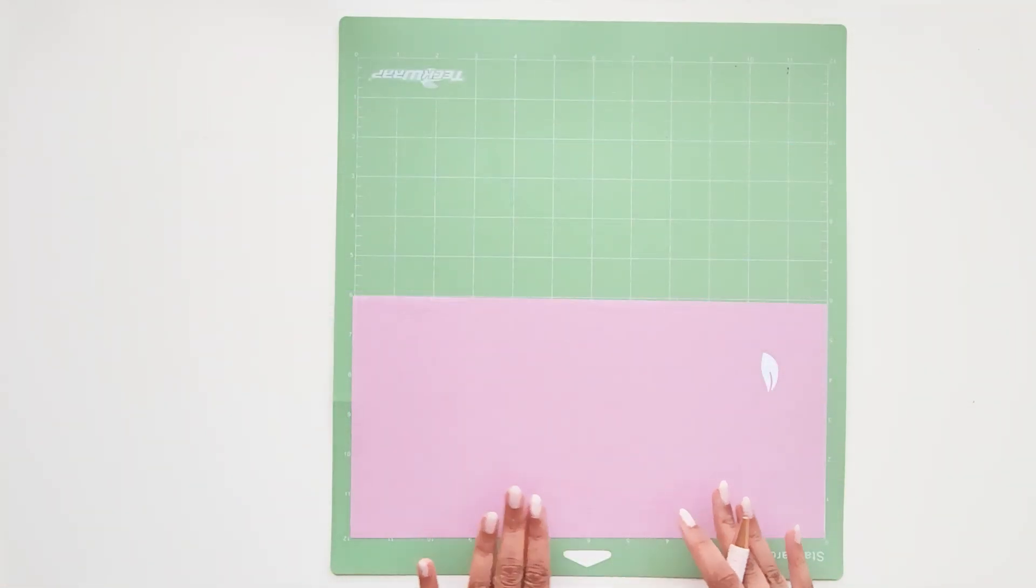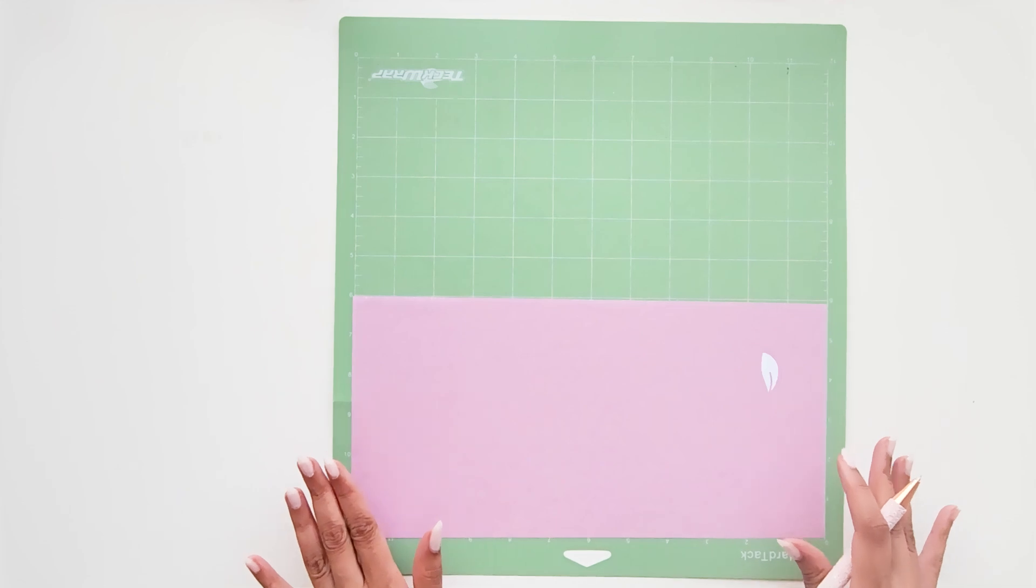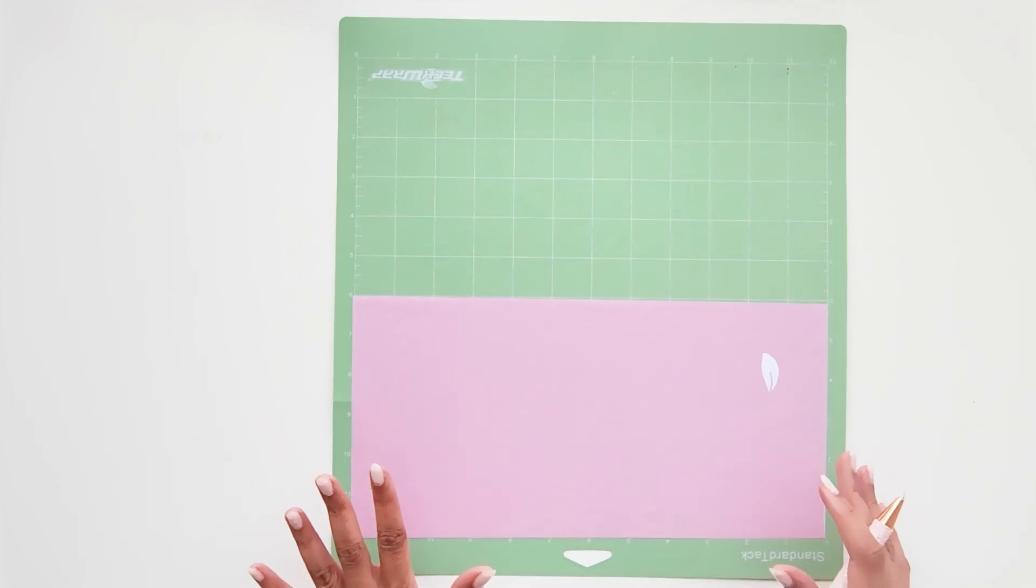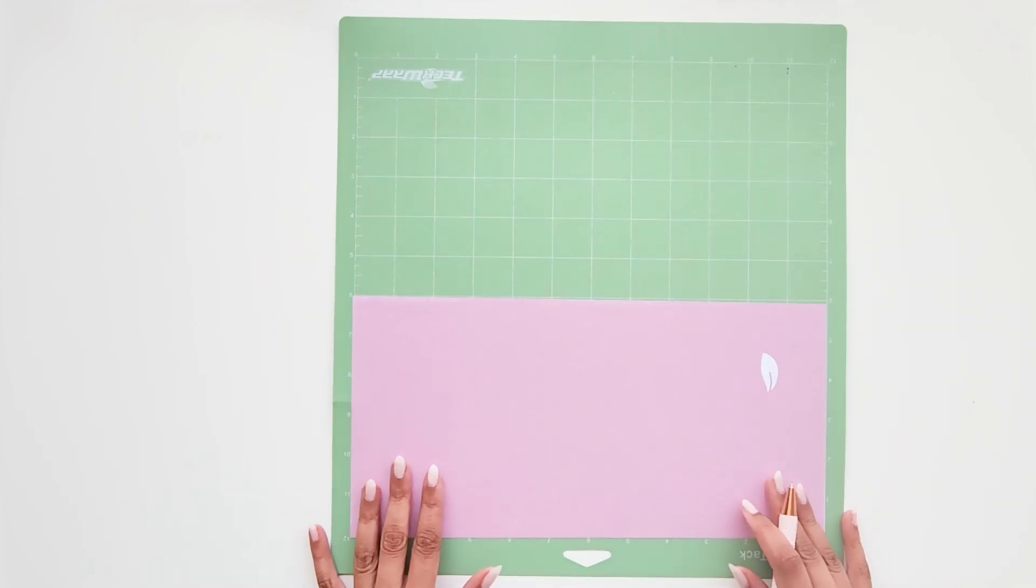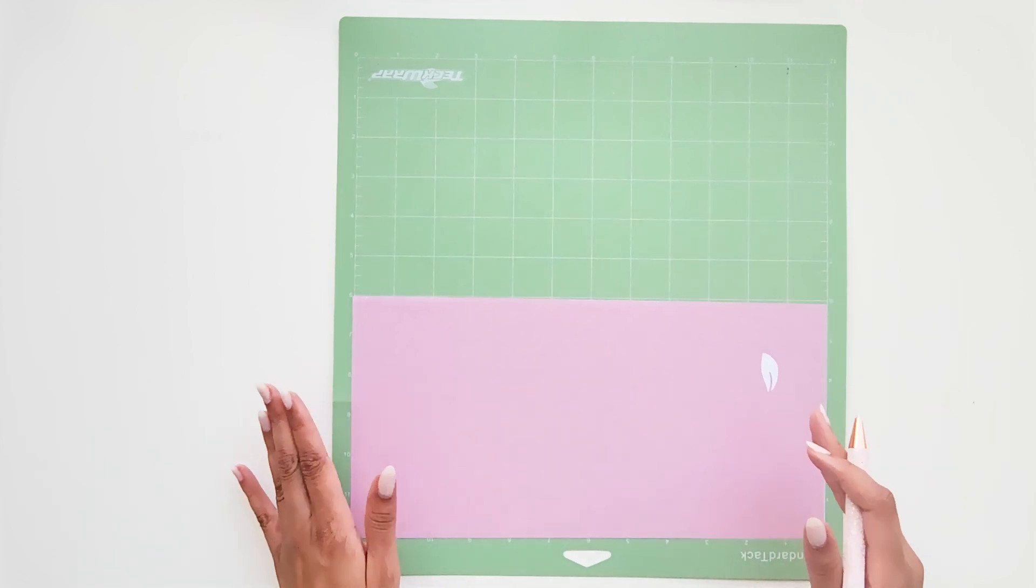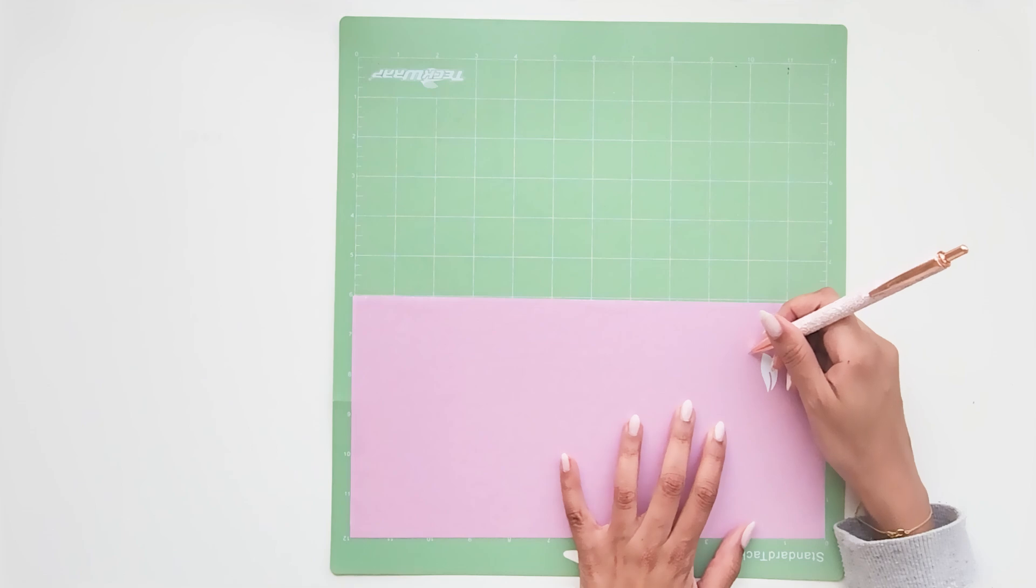I'm going to weed this on the mat because, as you saw the design, it's a bit complicated and intricate. So I'm going to be weeding it on the mat so that it does not curl up on me and it's easier this way.